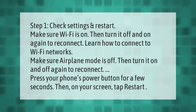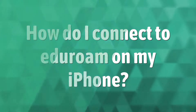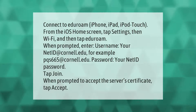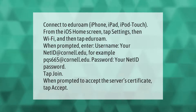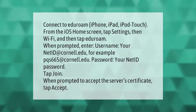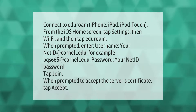Connect to eduroam on iPhone, iPad, or iPod Touch. From the iOS home screen, tap Settings, then Wi-Fi, then tap eduroam. When prompted, enter your username as your NetID at cornell.edu — for example, pqs665@cornell.edu — and your NetID password. Tap Join, and when prompted to accept the server's certificate, tap Accept.